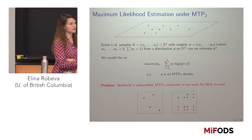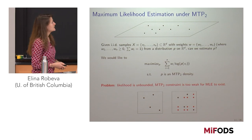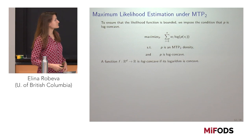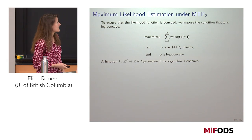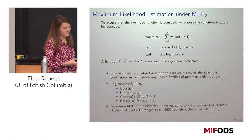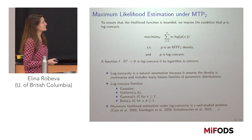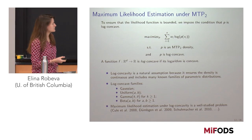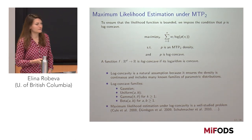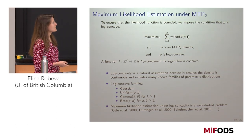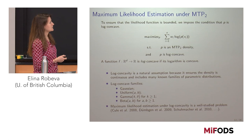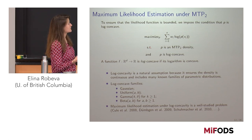So the MTP2 constraint alone is too weak, and we need to add something else. In this work, we added log-concavity. We assume that p is MTP2 and also log-concave — a function is log-concave if its logarithm is concave. This was a natural choice: it makes our density continuous on the domain, it includes many known parametric families like Gaussians, Uniform, and Gamma, and people had already studied maximum likelihood estimation under just log-concavity.